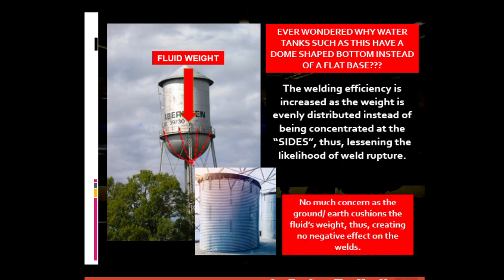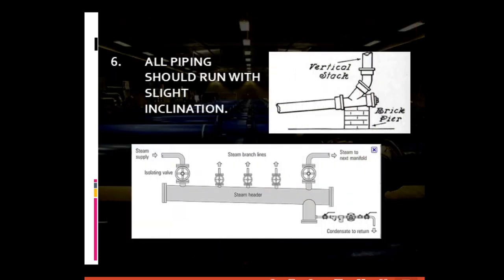For general piping requirement number six: all piping should run with a slight inclination. This is mainly to enhance pipe drainage without using any additional device. Usually, the angle of inclination is around 5 to 10 degrees, making it easier to discharge any unwanted fluids, especially during preventive maintenance.